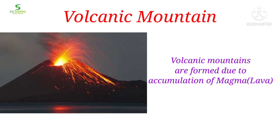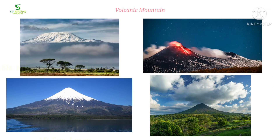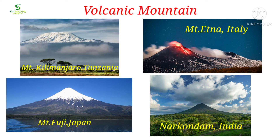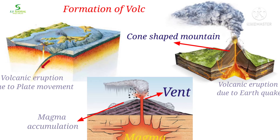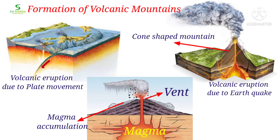When mountains are formed due to volcanic activity, they are called volcanic mountains. Mount Kilimanjaro, Mount Fujiyama, Barren Island, Krakatoa, Stromboli, and Mount Etna are notable examples of volcanic mountains.